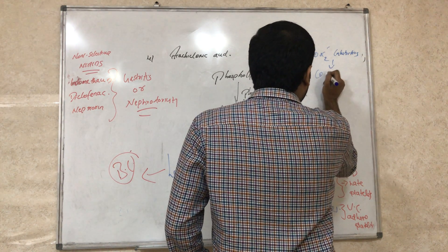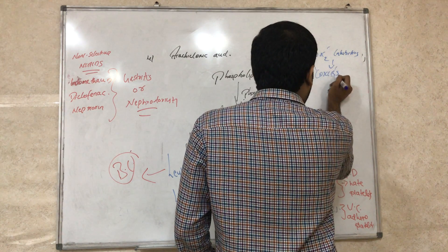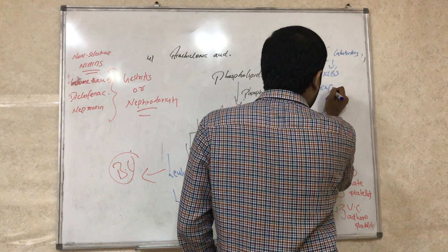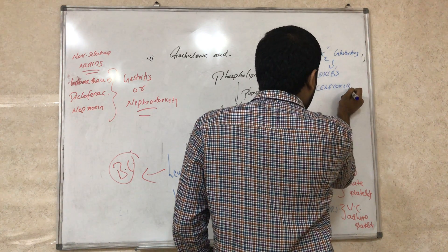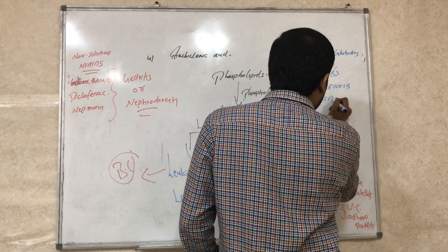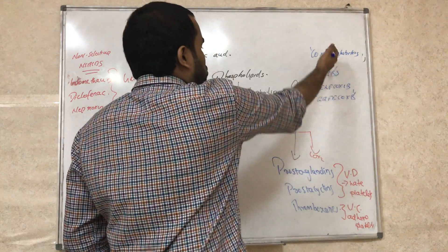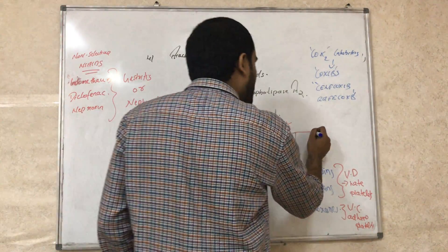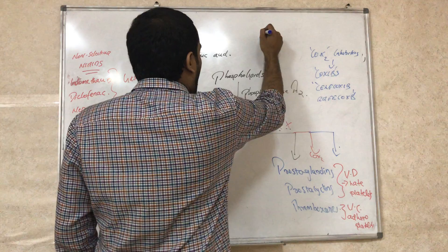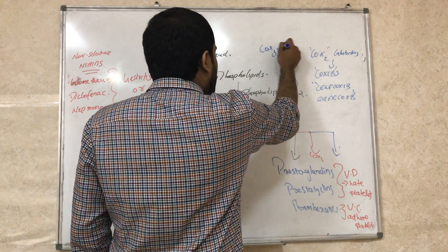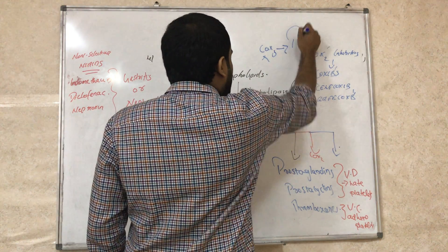They are the coxib drugs, all the coxibs like celecoxib, rofecoxib. These are inhibiting COX-2 specifically. Later we found out COX-3 inhibitor too. What is the COX-3 inhibitor? That is paracetamol.